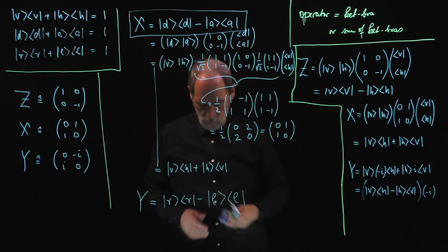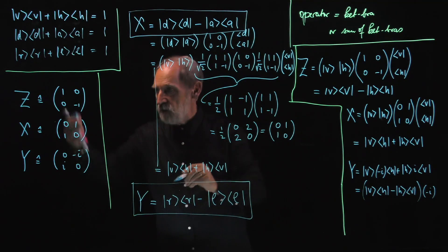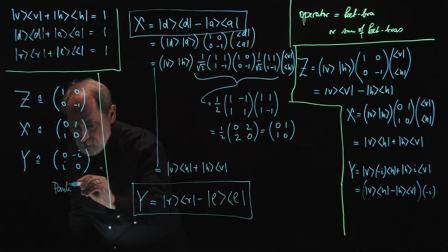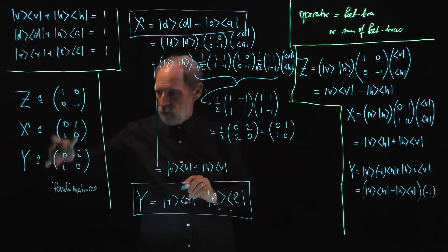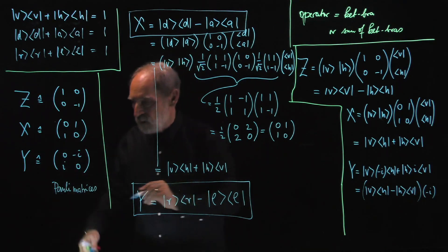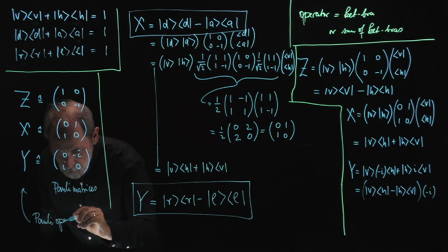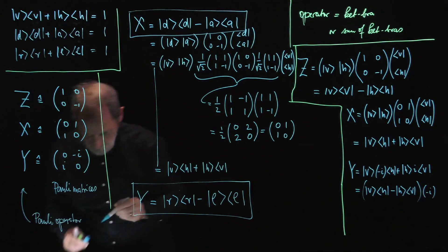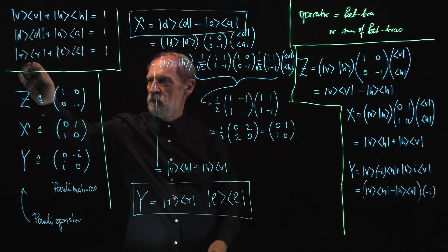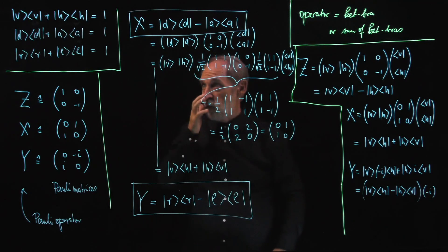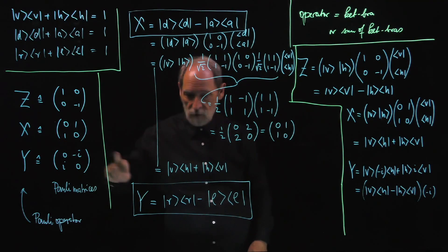For the matrices, these Pauli matrices, remember, we now understand that these Pauli matrices are numerical representation of these Pauli operators, which are operators that have eigenvalues plus one, minus one, plus one, minus one, plus one, minus one, but for the different kinds of polarizations. Z for vertical horizontal, X for diagonal anti-diagonal, Y for right-handed left-handed circular polarization.